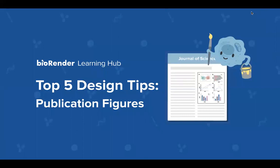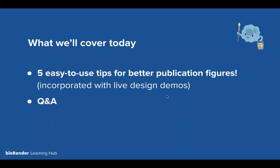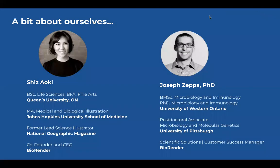Today we'll cover five easy-to-use tips for better publication figures. I'll incorporate one or two design demos so you can see the theory in practice, and we'll leave time at the end for Q&A. A little about ourselves — my background is in biological and medical illustration from Johns Hopkins University School of Medicine, and I worked at National Geographic Magazine before co-founding and working at BioRender.